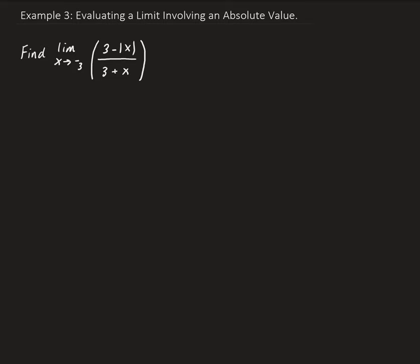The first thing we should do here is try direct substitution, and that will give us some insight into what to do next. Replacing x with negative 3, we get 3 minus the absolute value of negative 3, divided by 3 minus 3. That gives us 3 minus 3 all divided by 3 minus 3, which is an indeterminate result: 0 over 0.